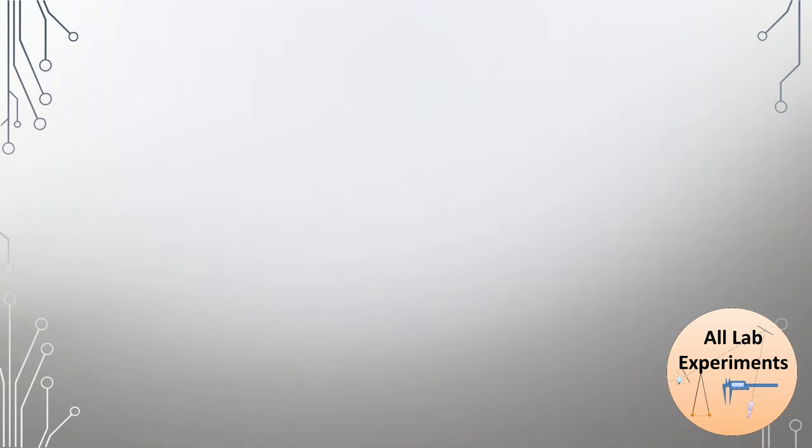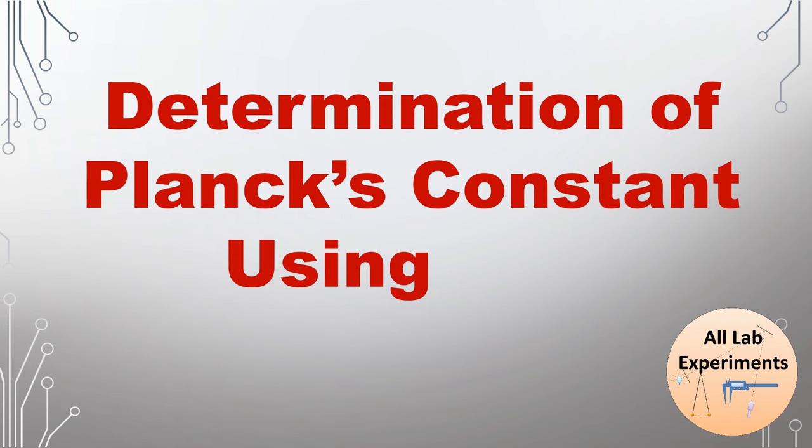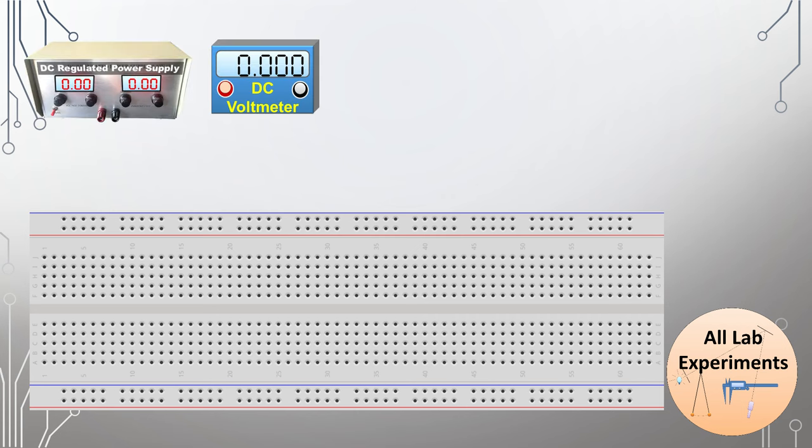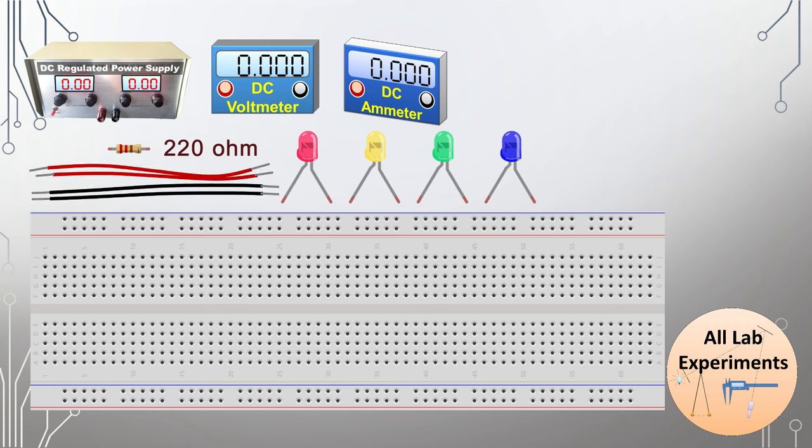Hello friends, today we are going to perform an experiment to determine the value of Planck's constant using LEDs. To conduct this experiment, we need a breadboard, a regulated power supply, a DC voltmeter, a DC ammeter, one 220 ohm resistor, one red, yellow, green, and blue LED, some connecting wires, and here is the circuit.